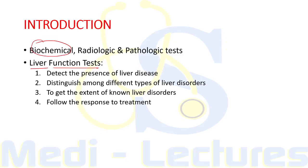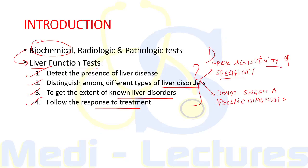Liver function tests can be used to detect the presence of liver disease, distinguish among different types of liver disorders, determine the extent of known liver disorders, and follow the response to treatment. However, these serum biochemical tests have certain shortcomings: they lack sensitivity and specificity, can be normal in a patient with severe liver disease and vice versa, and do not suggest a specific diagnosis — rather a general category such as hepatocellular or cholestatic disorder, which requires further evaluation.